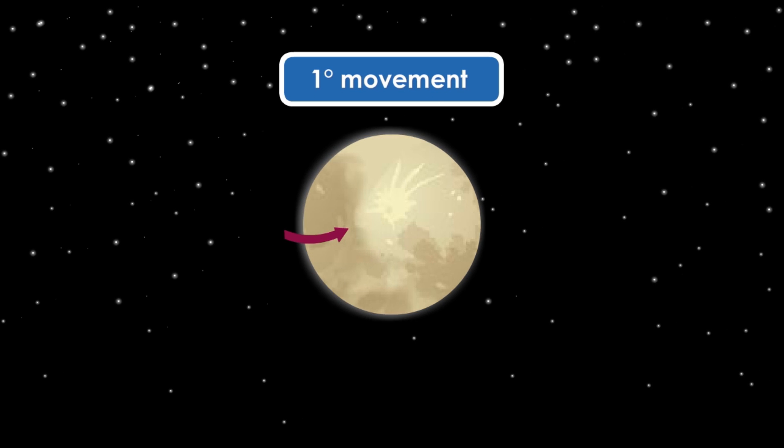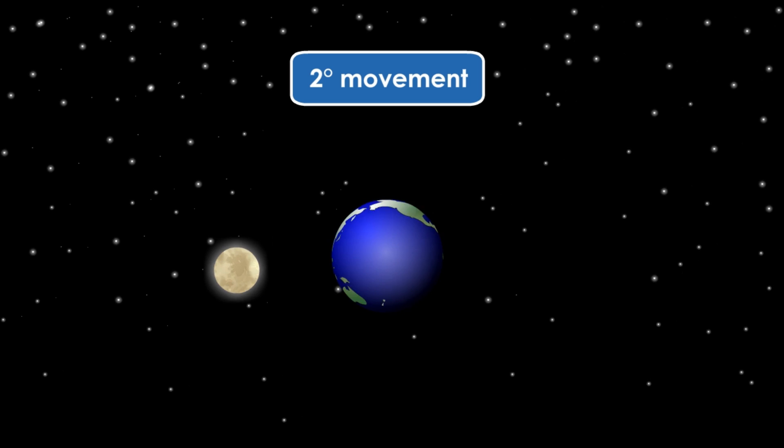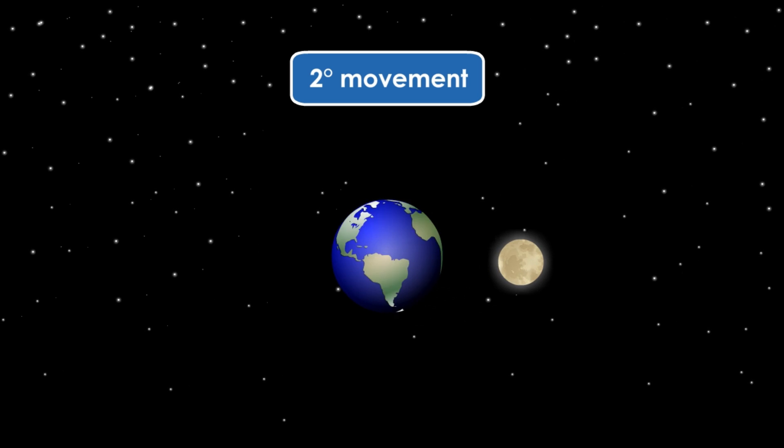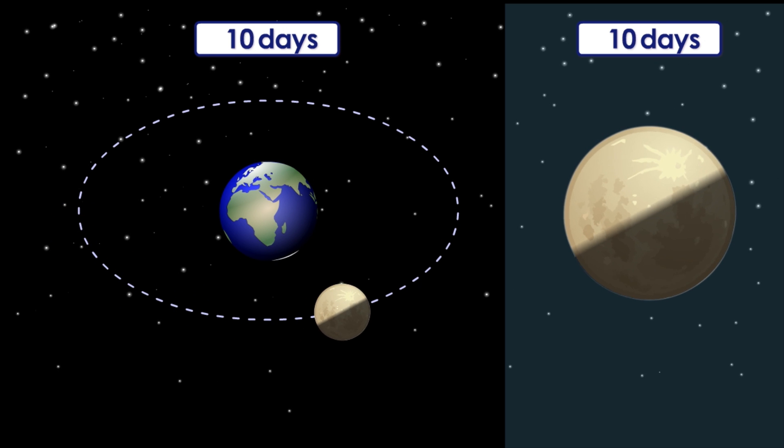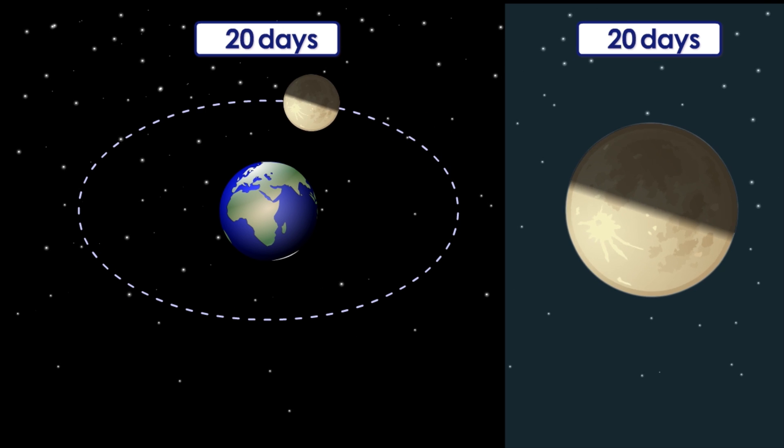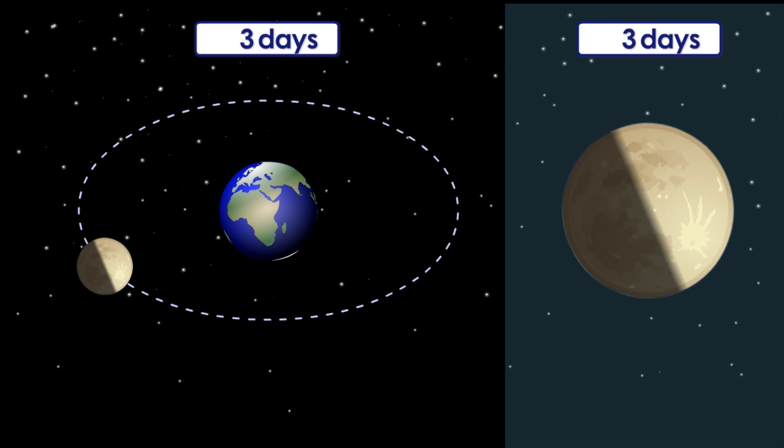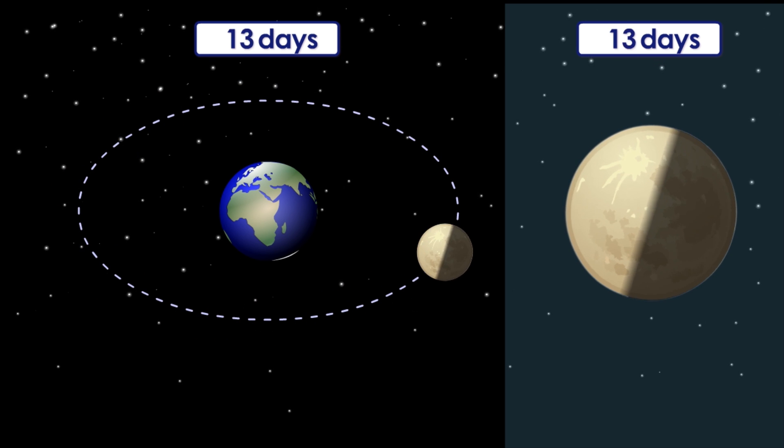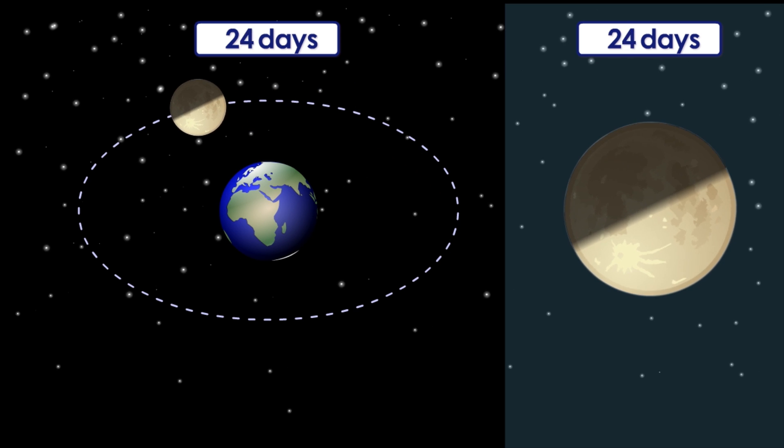The first movement is around itself. And the second one? It's around the Earth. Isn't it astonishing? It takes almost 28 days to orbit the Earth and the same time to rotate about its axis. That's why we always see its same face.